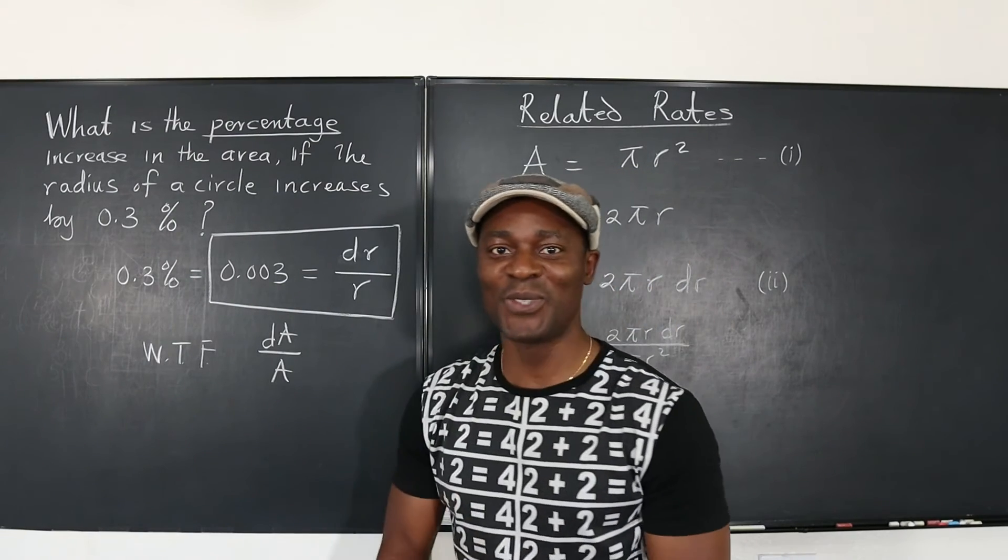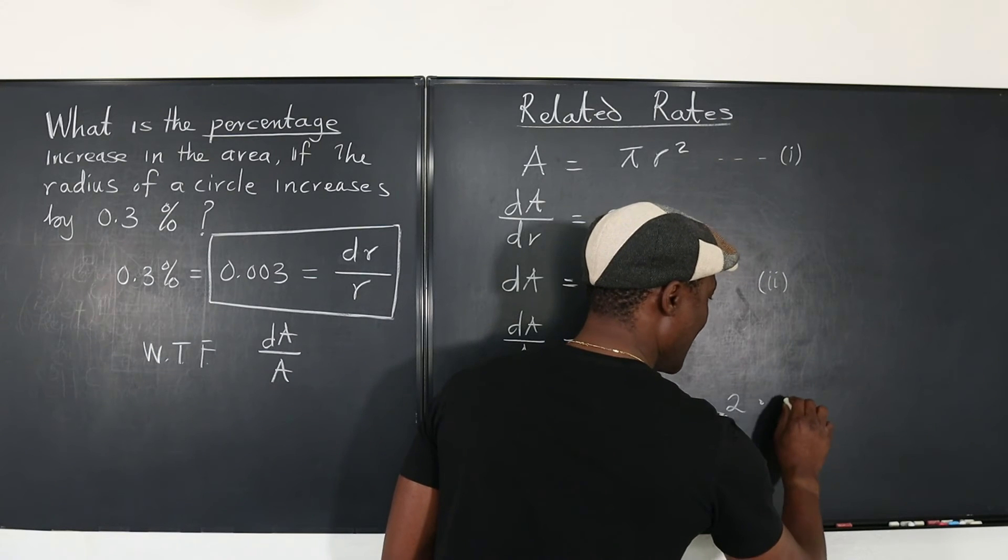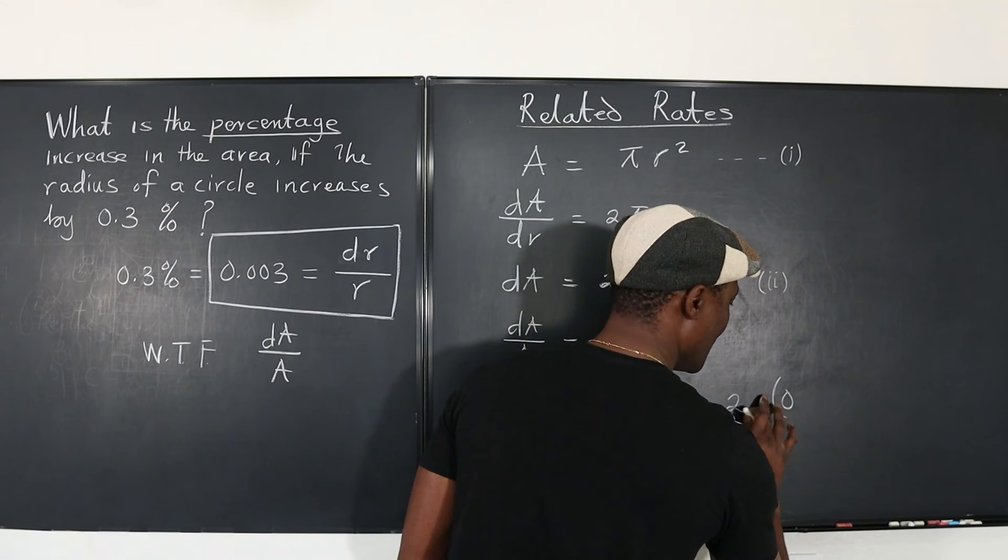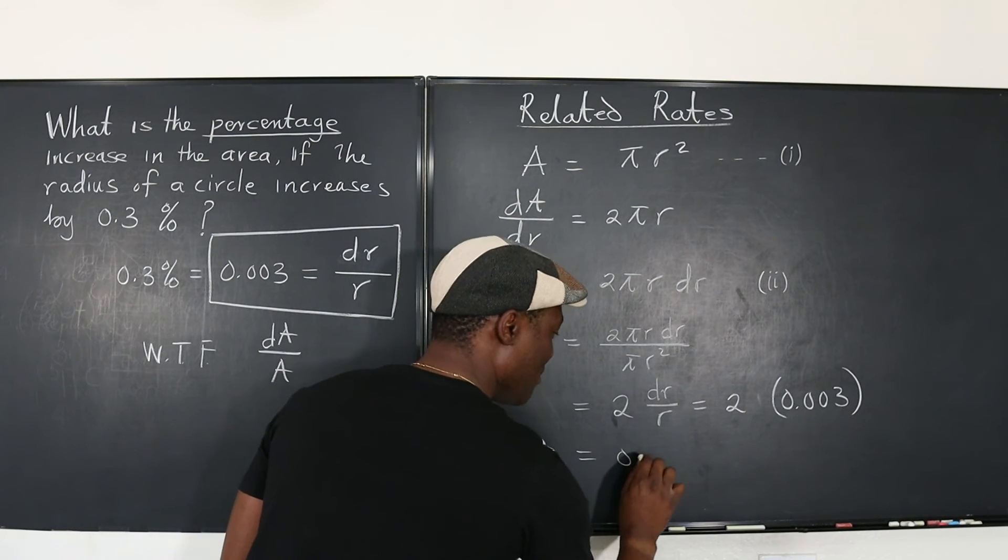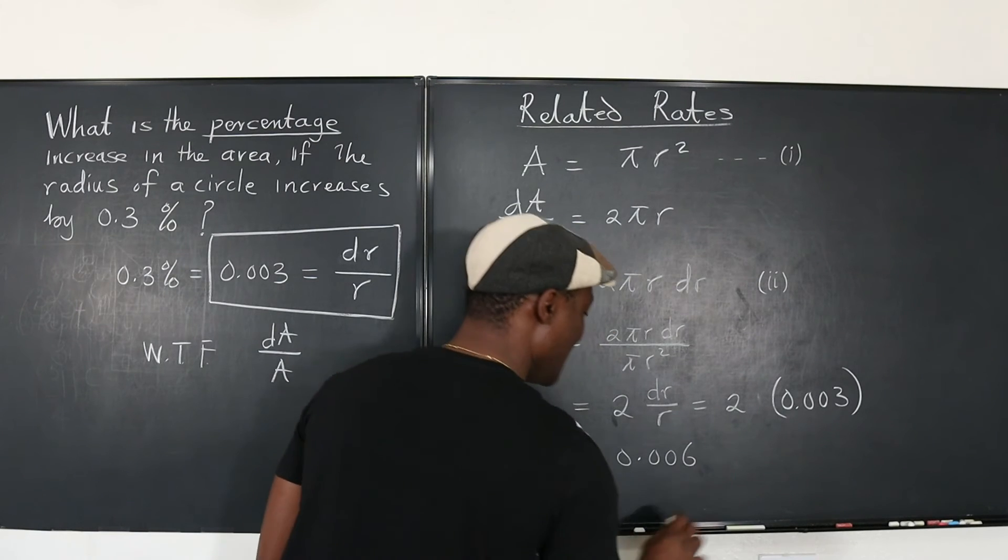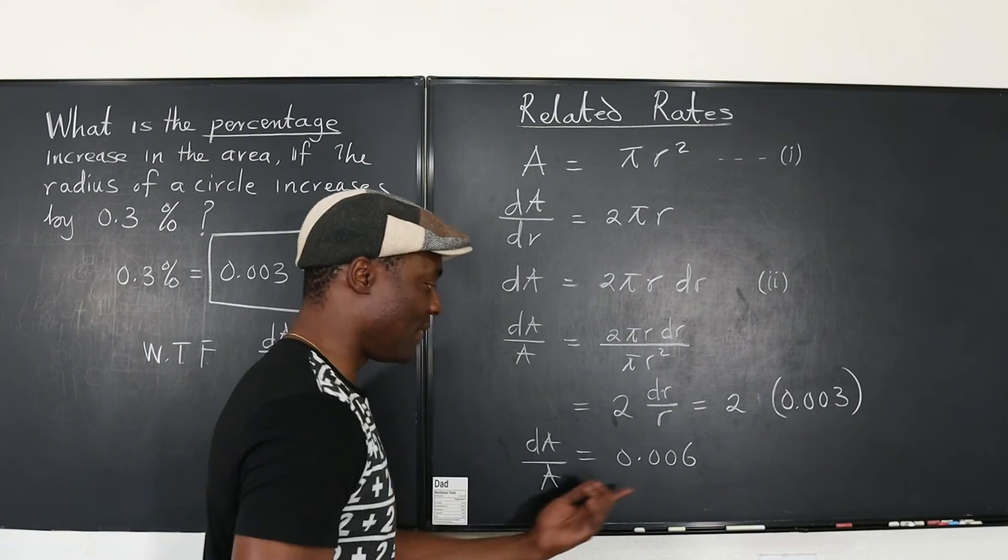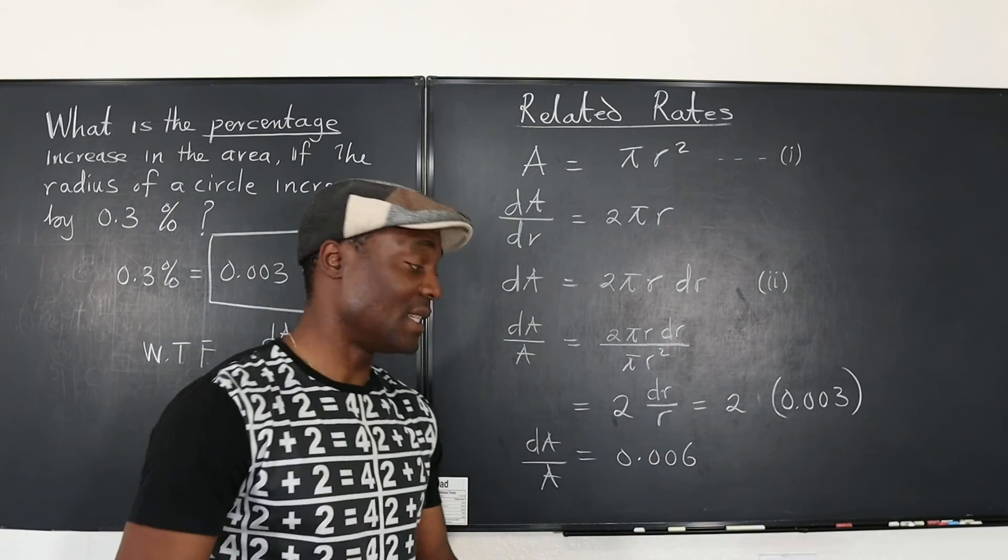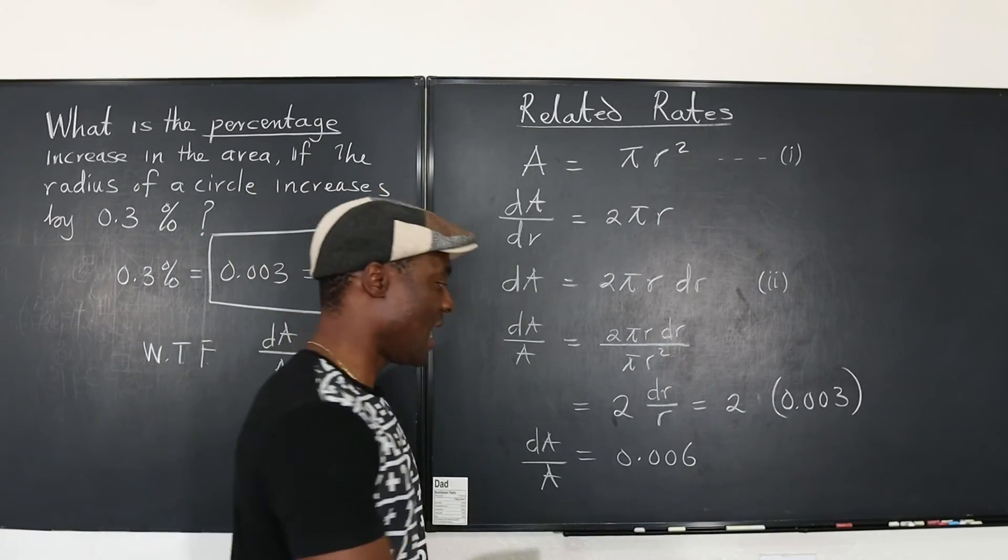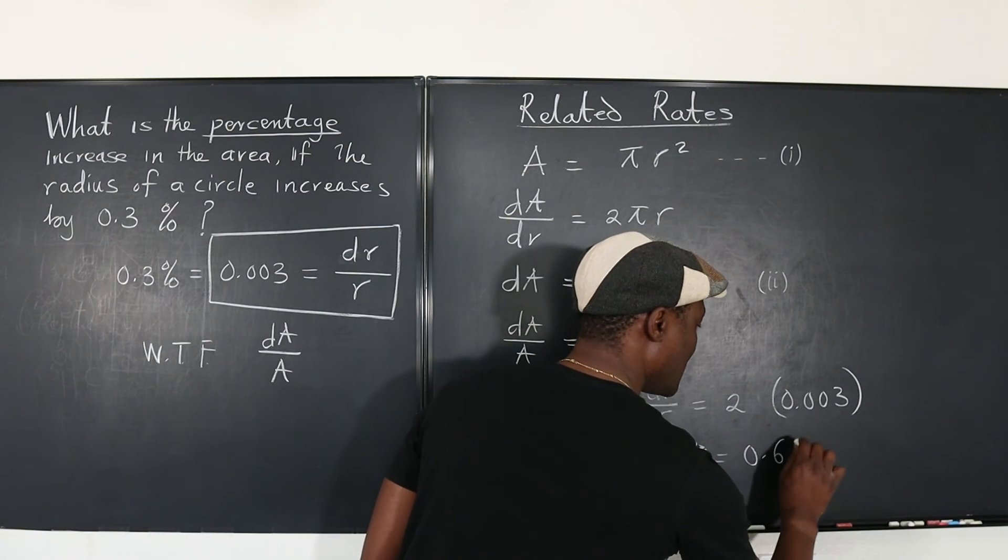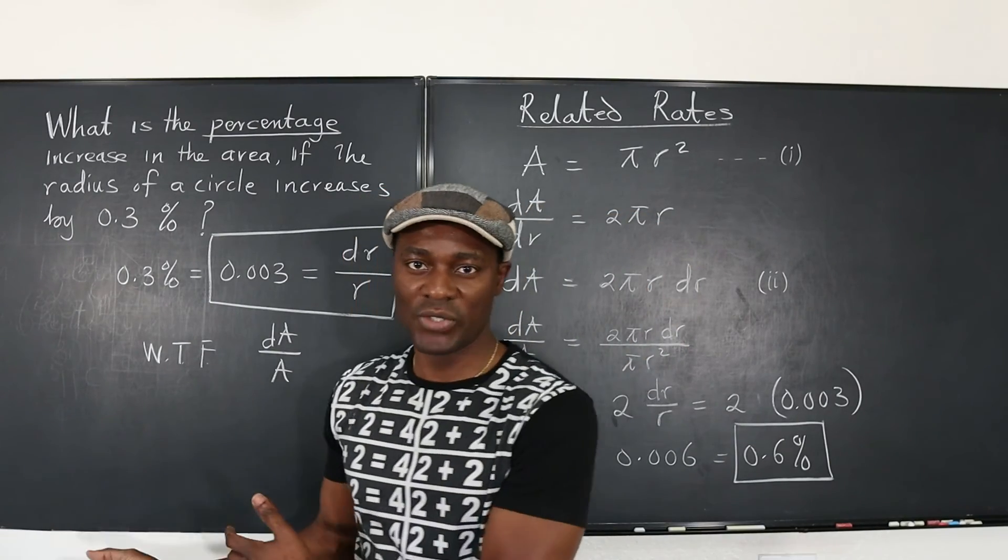What is dr over r? We just established that from the beginning: 0.003. So this is equal to 2 multiplied by 0.003, which gives us 0.006. That's dA over A. Now this is the fraction which we can now represent in percentage form. Well, in percentage form you just multiply by 100, and that gives you 0.6 percent.